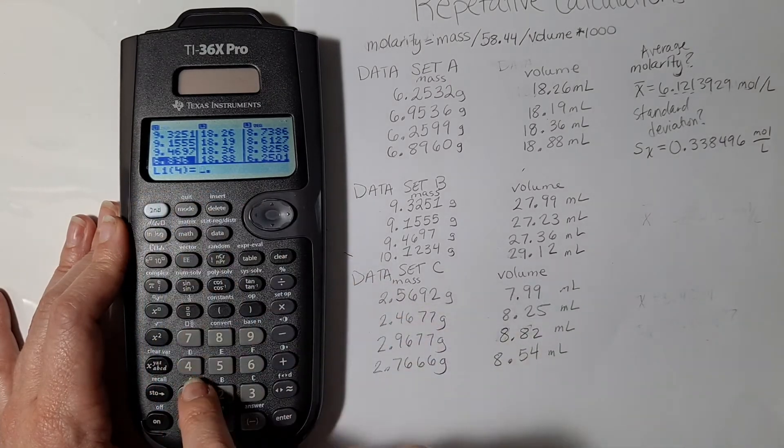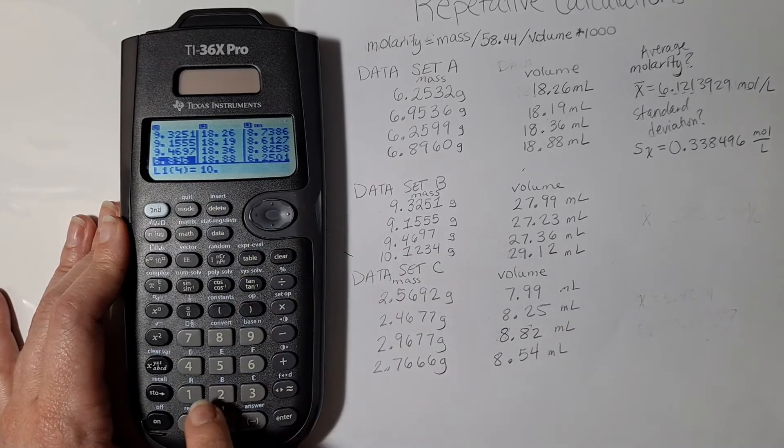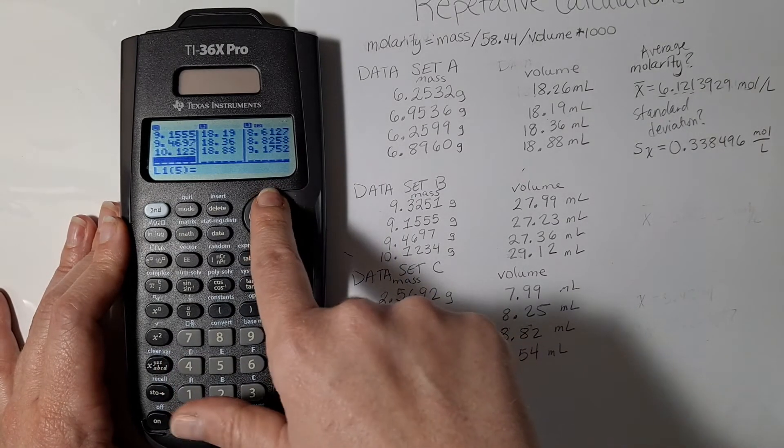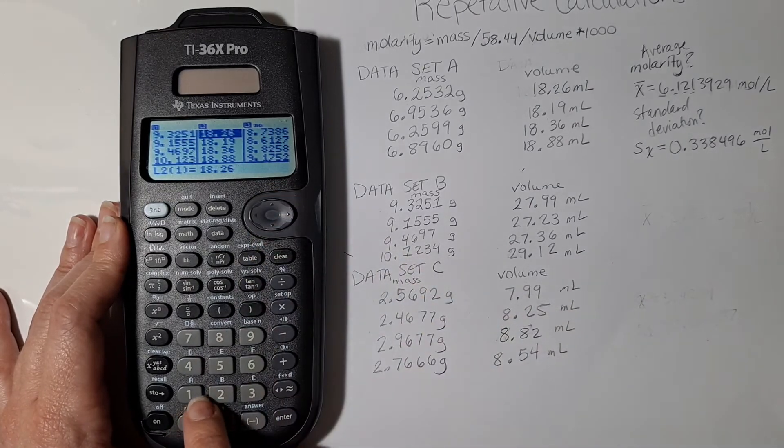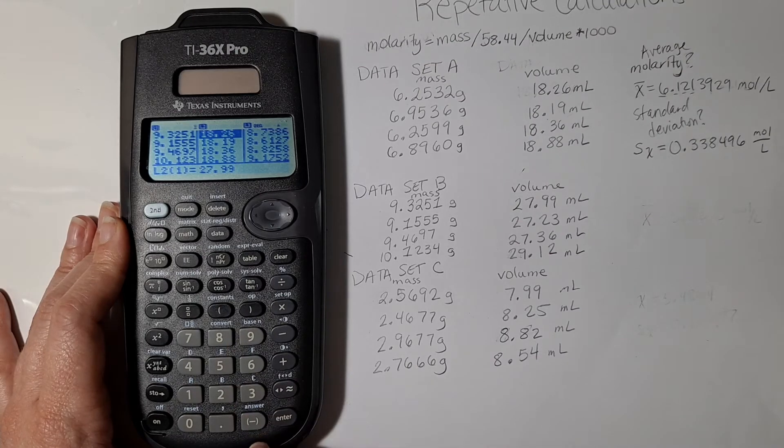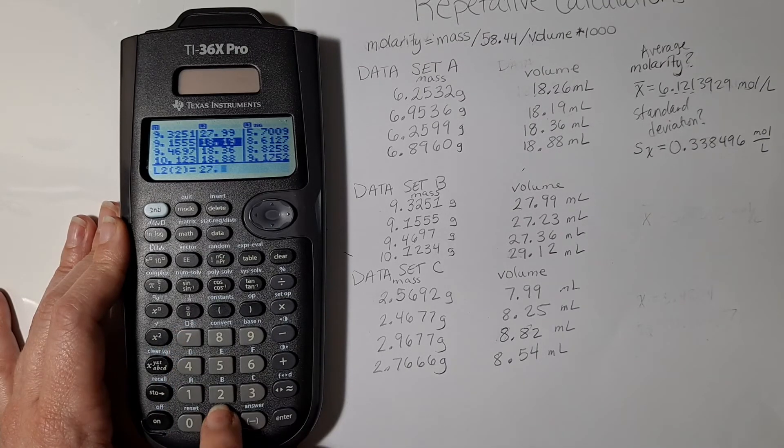If you go too fast then it might miss a digit that you're typing in because it does take a second as it recalculates. So I have to retype over my volumes as well in order to get my molarities accurate.